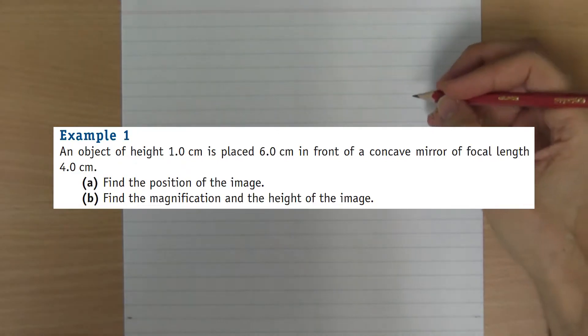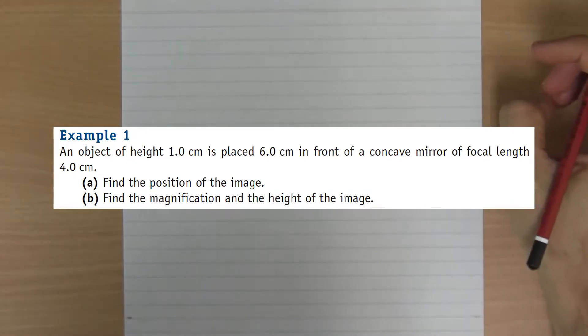This is Example 1 from Chapter 17, talking about using the formulas for curved mirrors. An object of height one centimeter is placed six centimeters in front of a concave mirror of focal length four centimeters. Locate and describe the image.